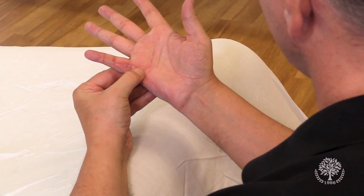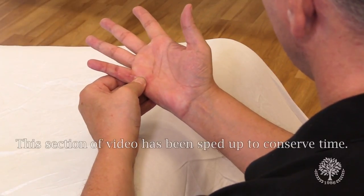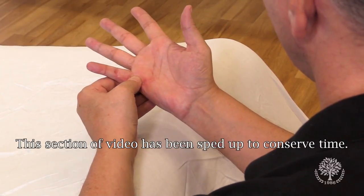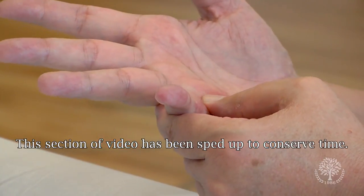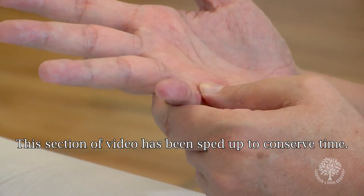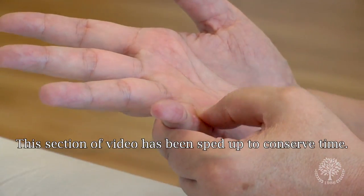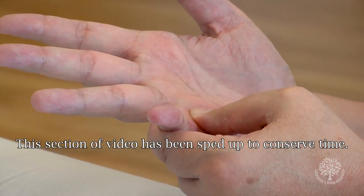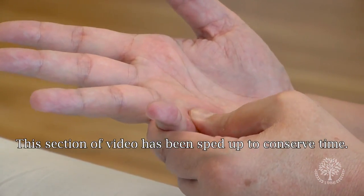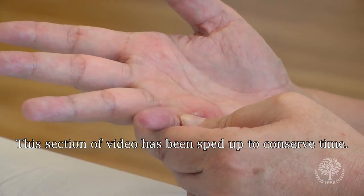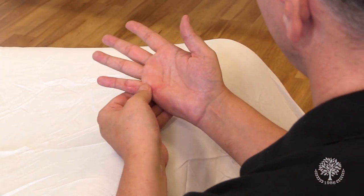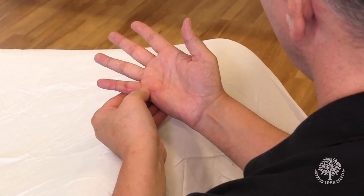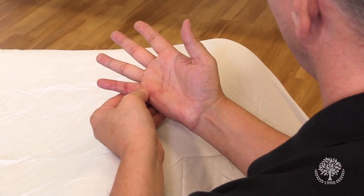Then I'm going to cross fiber friction. Good thing is that I can do this myself. Obviously you're only going to be able to do certain scars that you can reach easily. And this area right here at the metacarpal phalangeal joint.